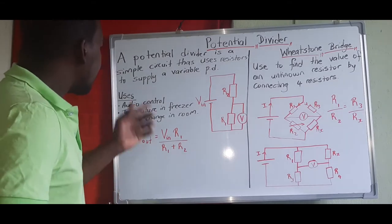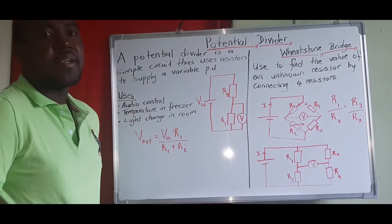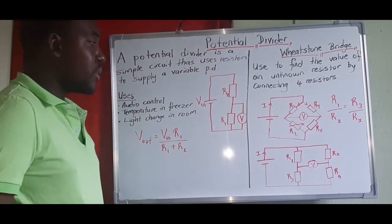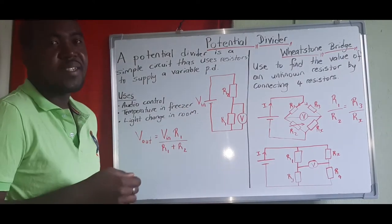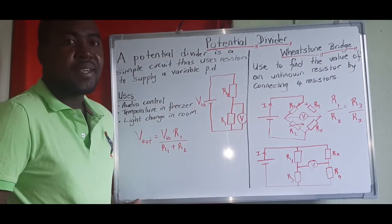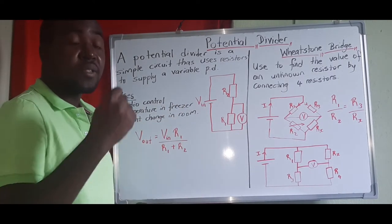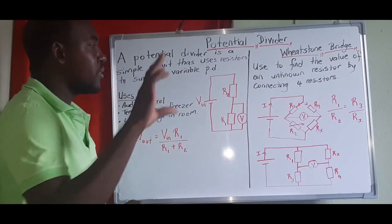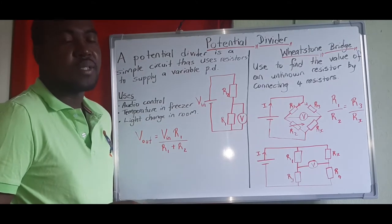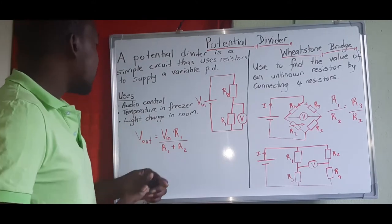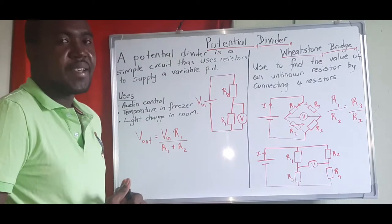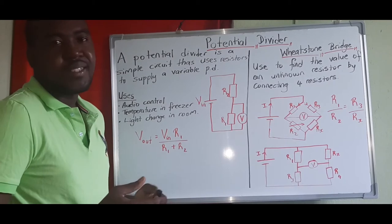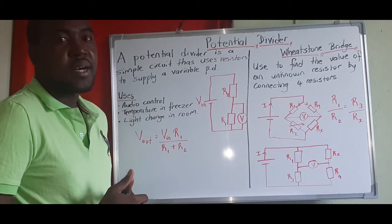The uses of potential dividers include controlling the audio of speakers — the simple knobs that you turn to get your volume up or down work by altering the voltage being supplied to the speakers. The same principle applies to temperature control in a freezer, and to light changes in your room for remote lights.